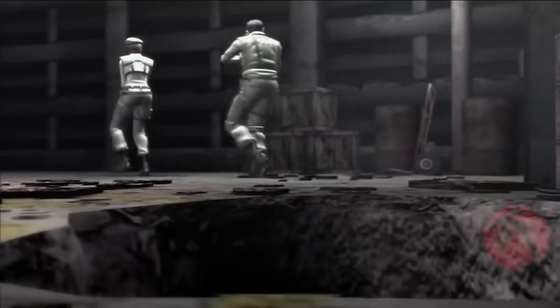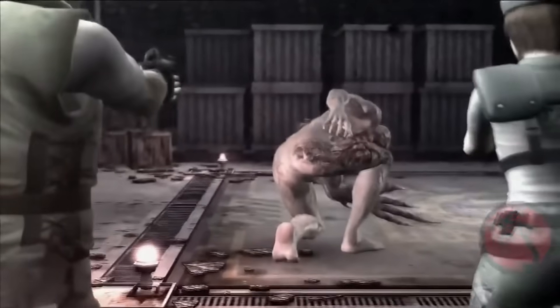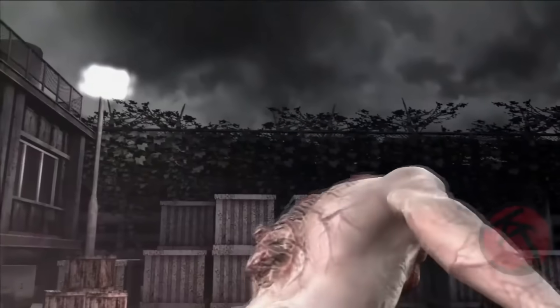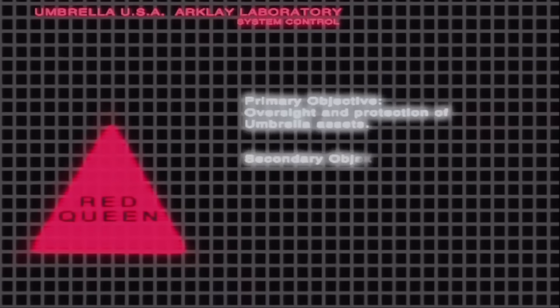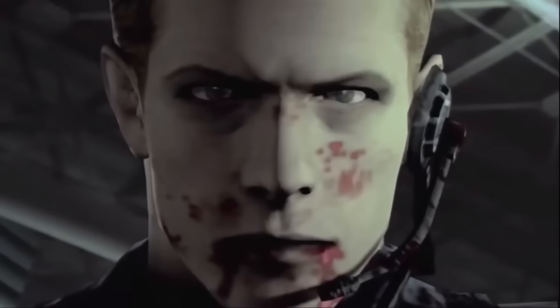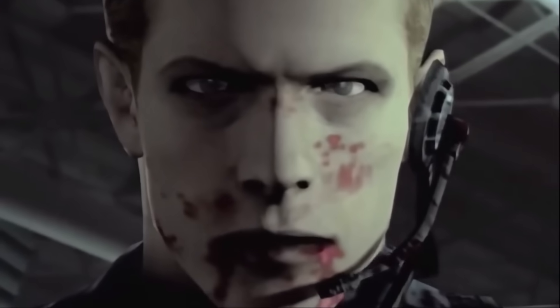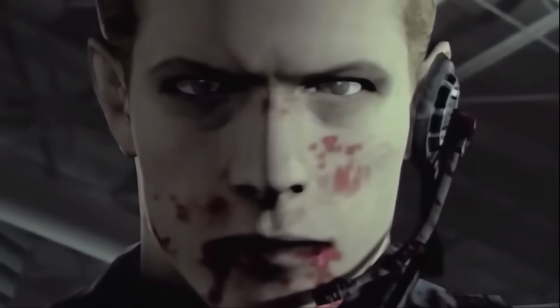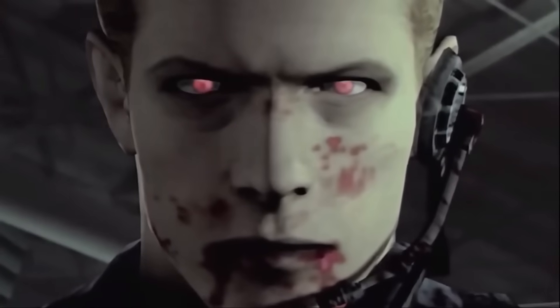It was Wesker's idea to unleash T-002 to learn about its capabilities against opponents. He had injected himself with a virus obtained from Birkin, which gave him superhuman strength, speed, and regenerative powers. So when the tyrant seemingly killed him, he allowed his regenerative abilities to kick in.